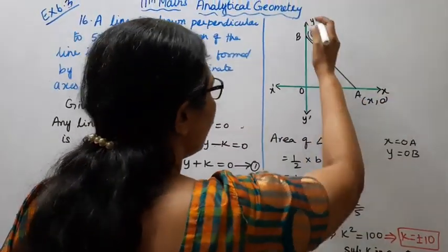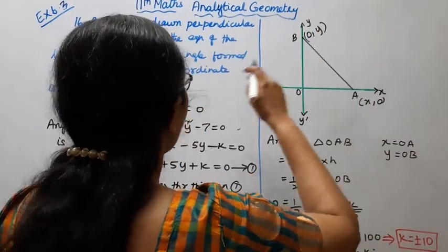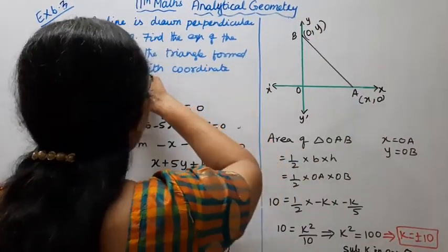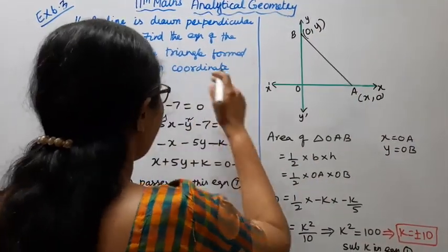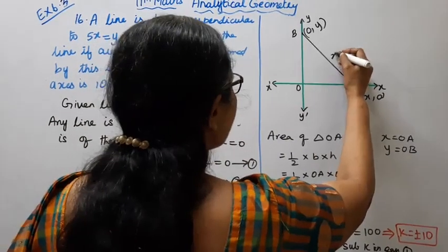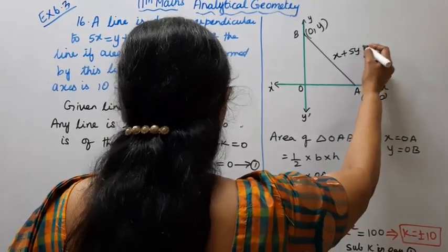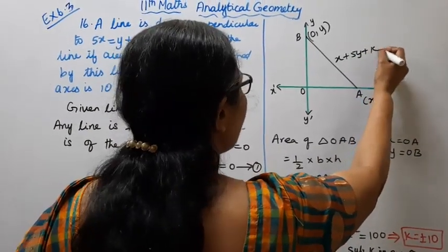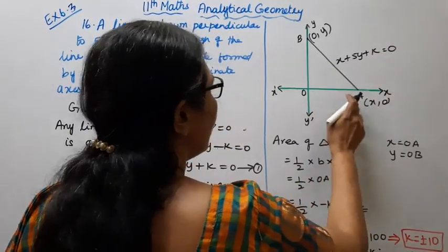The perpendicular line meets the x-axis and y-axis. The equation of the line is x + 5y + k = 0.